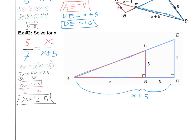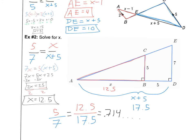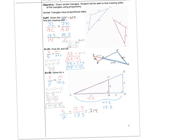We can check it: plugging in 12.5 makes the total distance 17.5. So we ask, is 5 to 7 the same as 12.5 to 17.5? Doing 5 divided by 7 on the calculator gives about 0.714, and 12.5 divided by 17.5 also gives 0.714 — so the proportion checks out. That's it for 7.4; I'll see you guys on the next video.